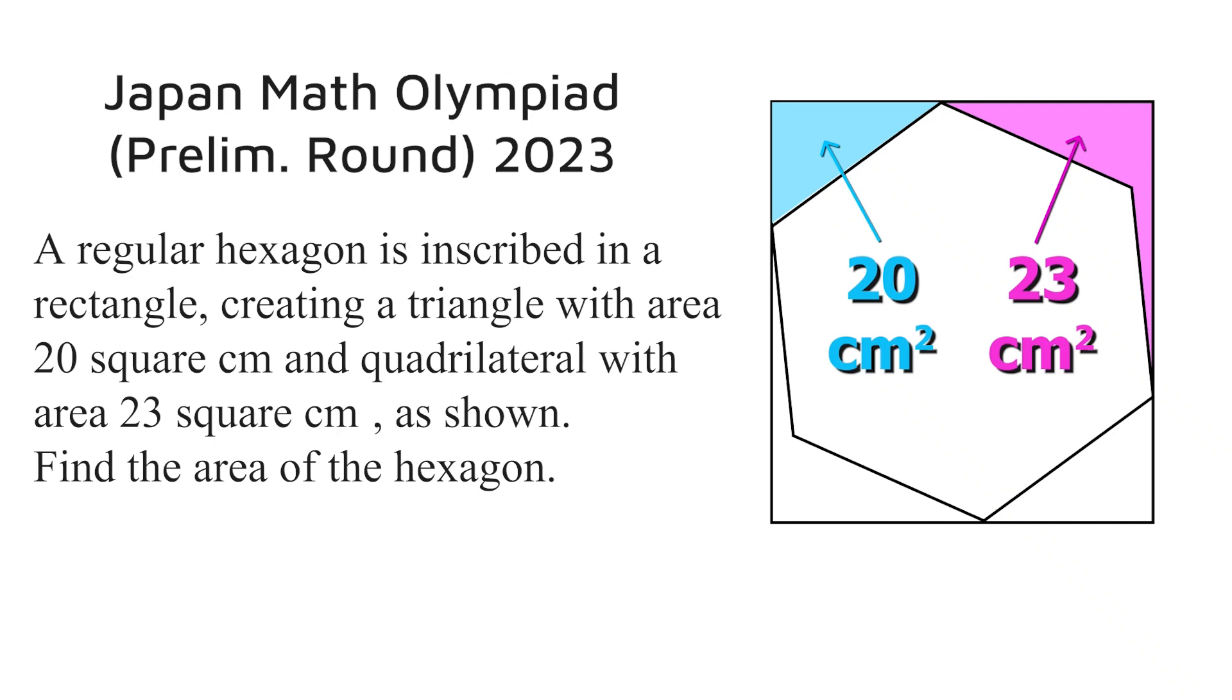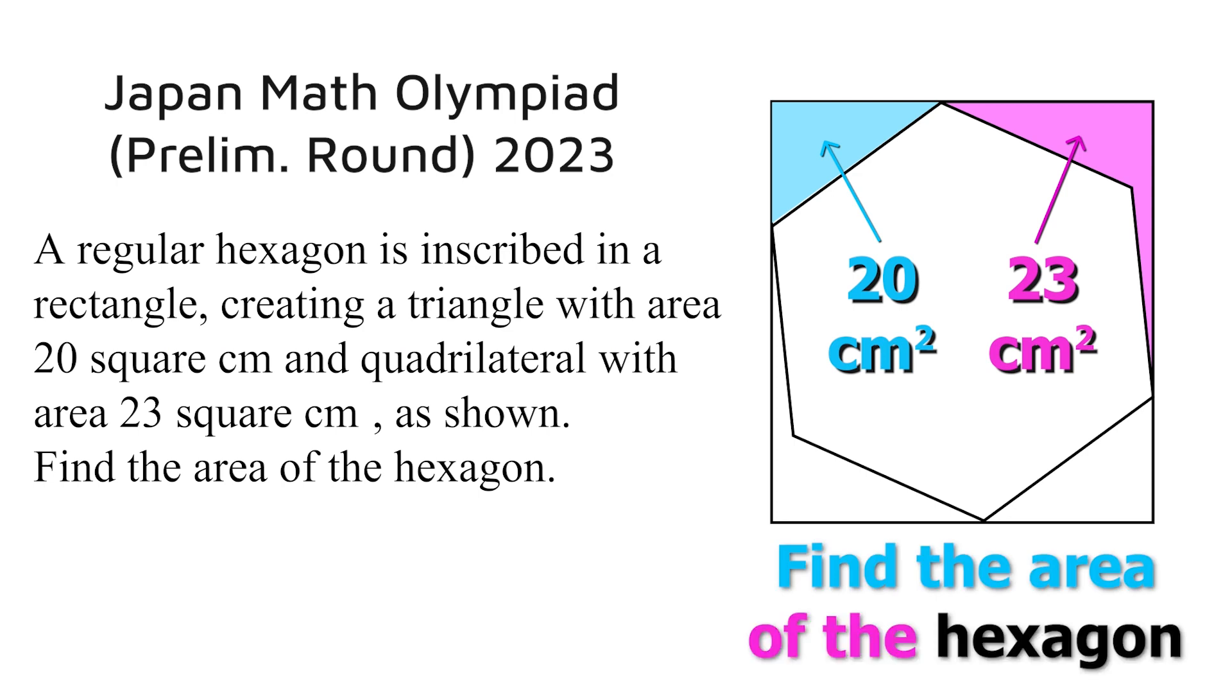This is a geometry problem from the preliminary round of the Japanese Mathematical Olympiad 2023. We're told that we have a regular hexagon inscribed in a rectangle and an area of 20 and 23 as shown. The challenge is to find the area of the hexagon.